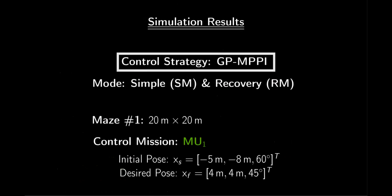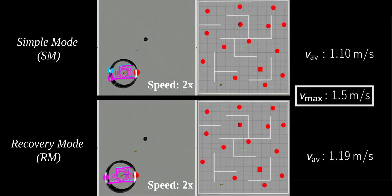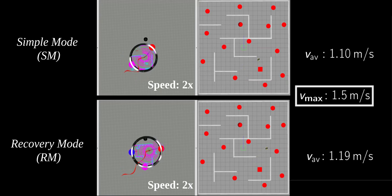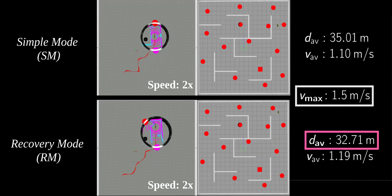Here, we present the simulation results of our proposed GP-MPPI control strategy for the MU1 mission, showcasing the two operating modes. We can clearly observe that our proposed control strategy successfully achieves collision-free navigation in both modes, without getting stuck in local minima. Moreover, activating the recovery mode during the MU1 mission improves the average distance traveled by the robot.